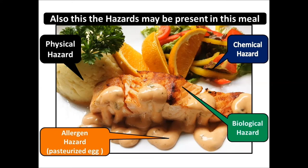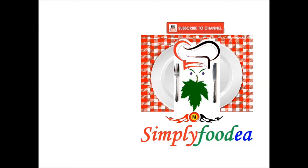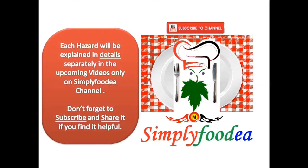As a food safety standard, we must all have knowledge about physical hazards, allergens, chemical hazards, and biological hazards to understand exactly what the controls are — whether in the kitchen or in food industry, including restaurants, factories, and manufacturing processes. Each hazard will be explained in detail separately in upcoming videos only on the Simply Foodia channel. Don't forget to subscribe, like, and share. If you have any feedback or information you want clarified, please don't hesitate to contact me.